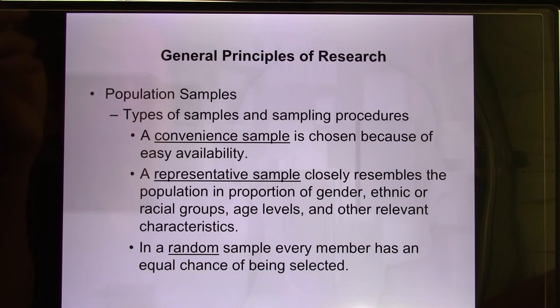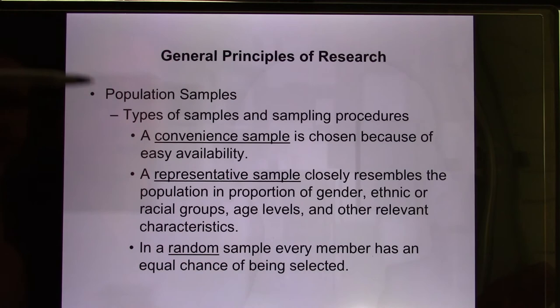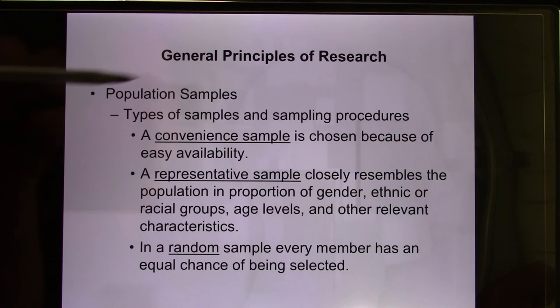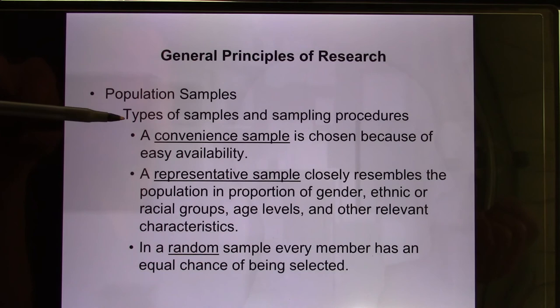In psychology, they talk a lot about the sample because you can get a biased result by having a biased sample. There are different kinds of samples. You can have a convenience sample — say you're in college and you want to do the questionnaire, so you go to campus and give it to whoever is nice to you. That's a convenient sample.